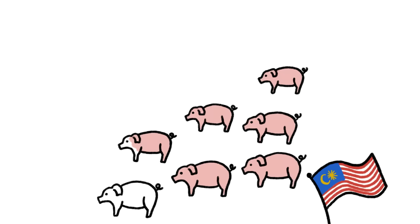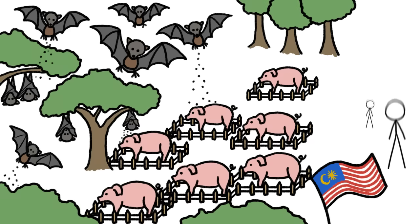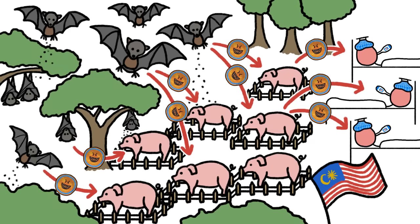In Malaysia, for example, the spread of commercial pig farms into bat-inhabited forests led to the first human outbreak, via pigs, of Nipah.